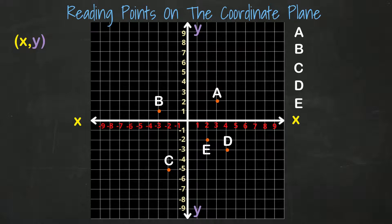Let's start with A. We know the x value always comes first. We can see we need to move to the right three spaces when looking from the origin, so we write down three. We also see from here we need to move up two spaces. Two is our y value. The coordinates of point A are three and two.